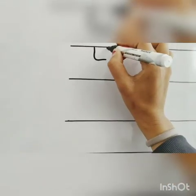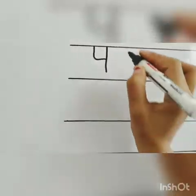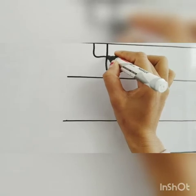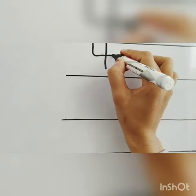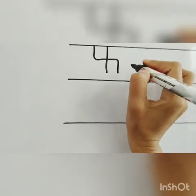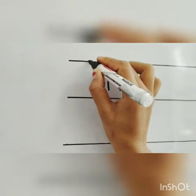First of all, you will make a paw. Then a standing line. Then you will give a sleeping line and a standing line. This way you will make a paw.